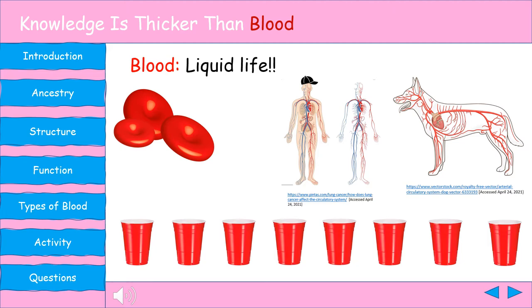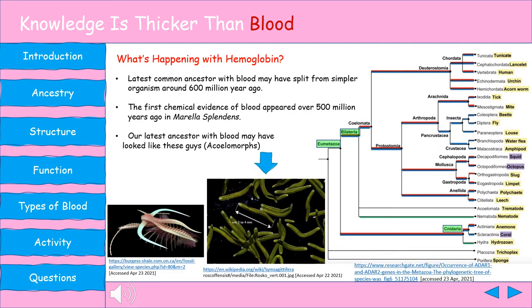Before we can get into blood and how it functions and what it does and where it goes, we have to figure out where it came from. Currently, blood is known to have been around for quite a long time, with the oldest fossil evidence dating back to around 500 million years ago in a species known as Morellus splendens. On the left side of the slide is a reconstructed image of Morellus, which is the oldest known organism to have any chemical evidence of blood in its fossils.